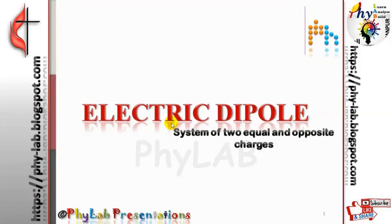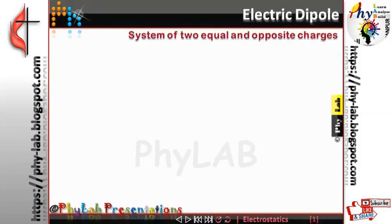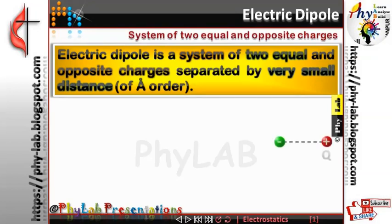In this video we are going to study about electric dipole. An electric dipole is a system of two equal and opposite charges separated by a very small distance. Here we have two charges of equal magnitude Q but opposite nature — one is minus Q and another is plus Q — separated by a distance of 2L, which is supposed to be very, very small.